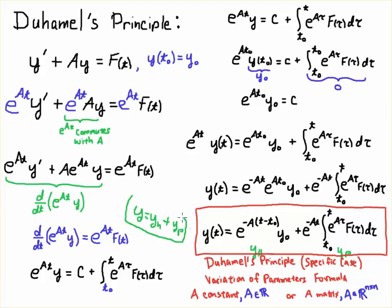And we expect that for non-homogeneous problems. And this F on the right hand side certainly makes this equation non-homogeneous. All right, that's Duhamel's principle or the variation of parameters formula for the case where we have a constant. And this works for scalars as well as matrices. Good luck.